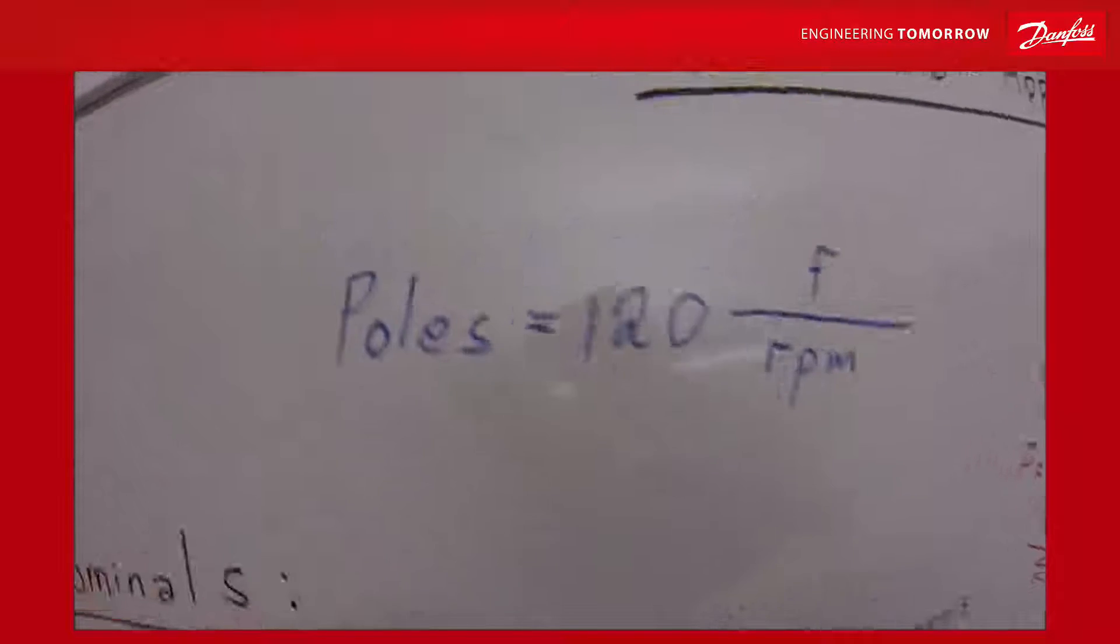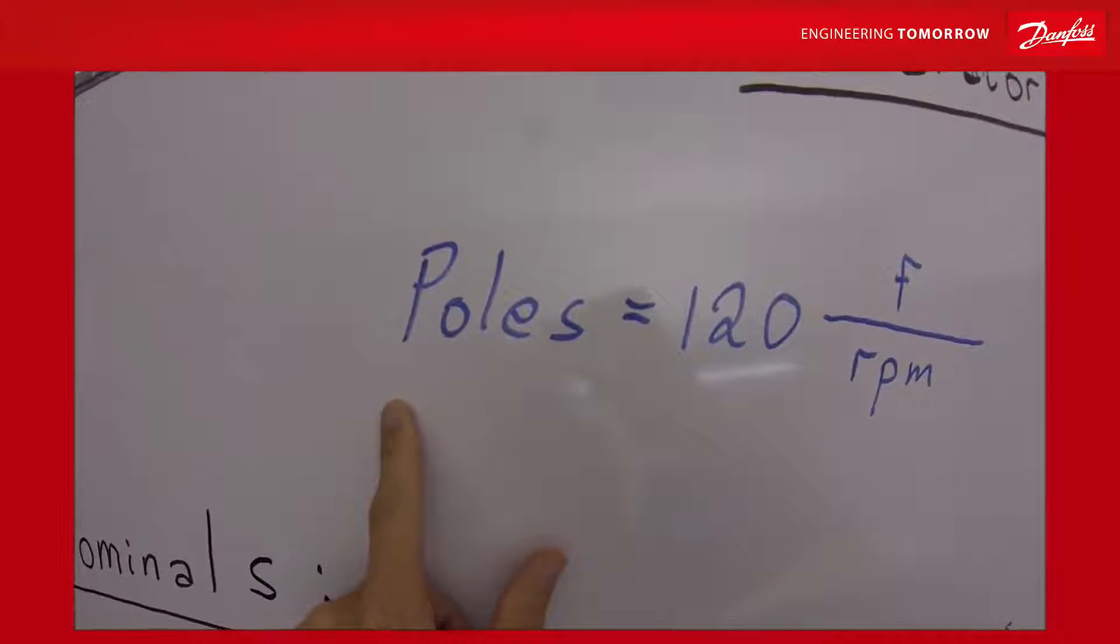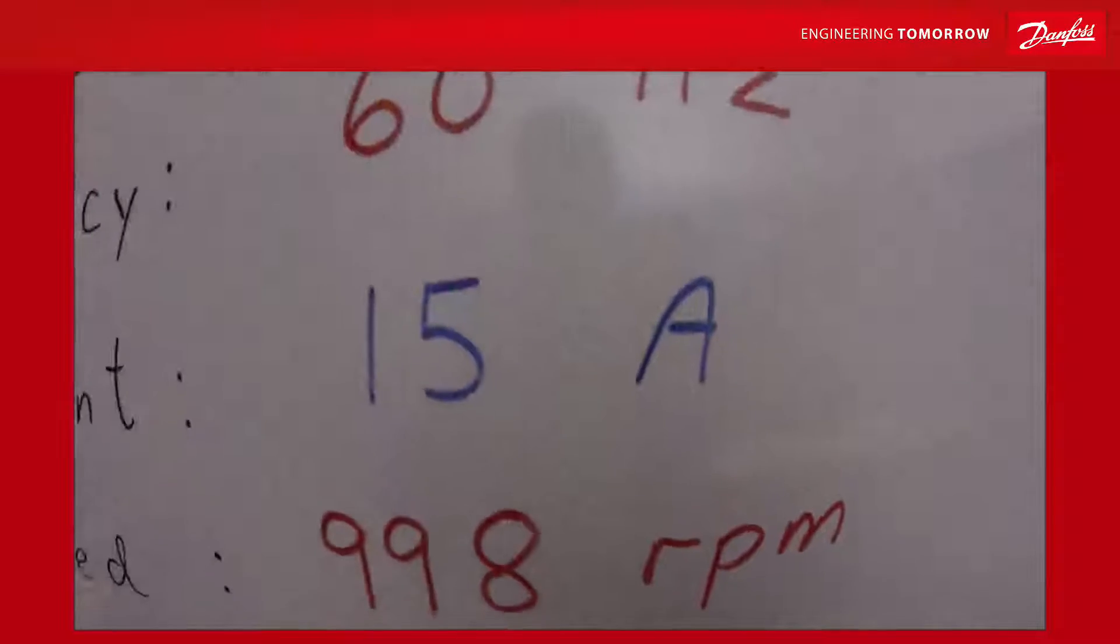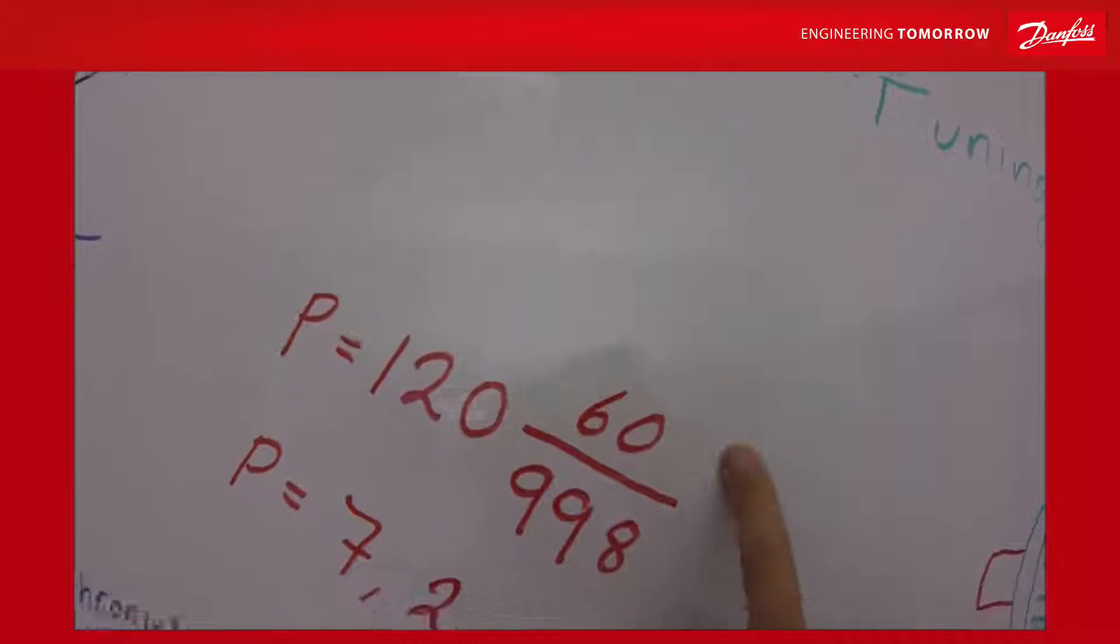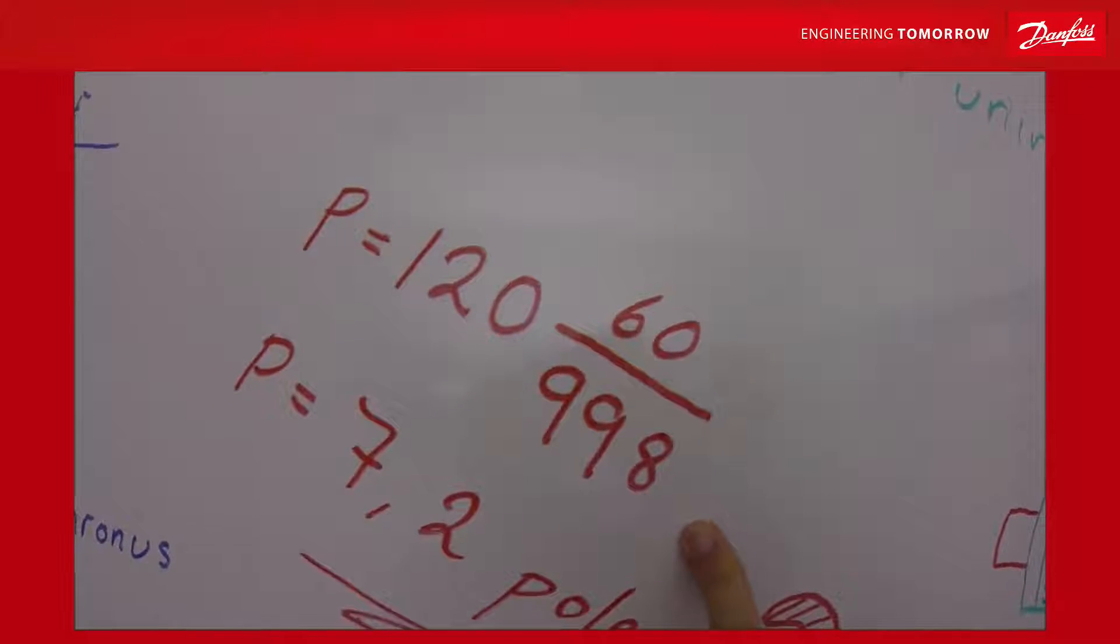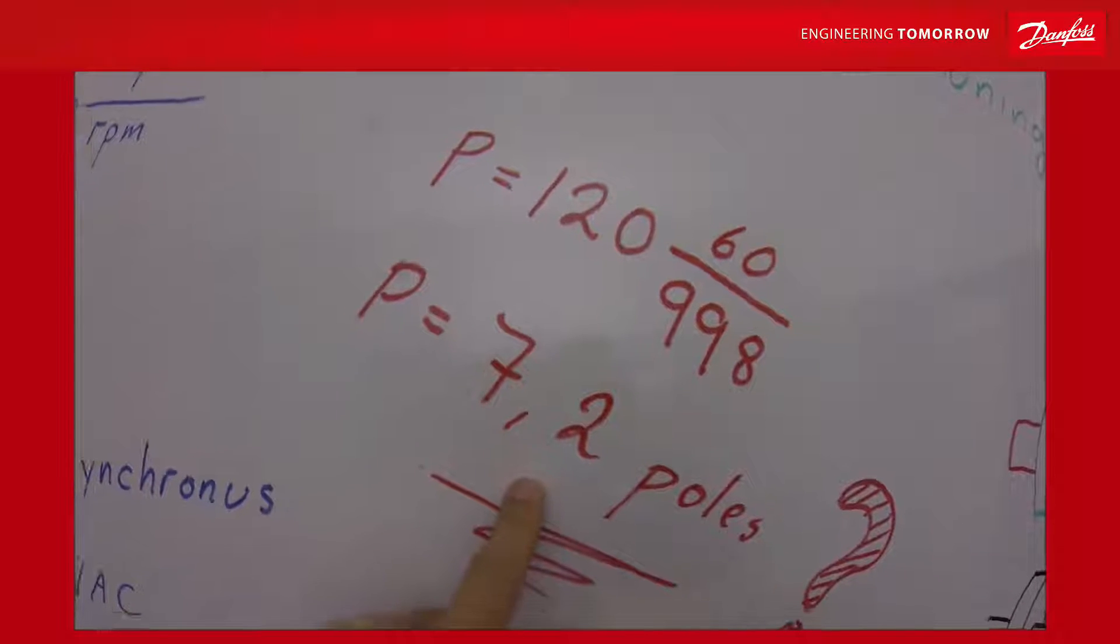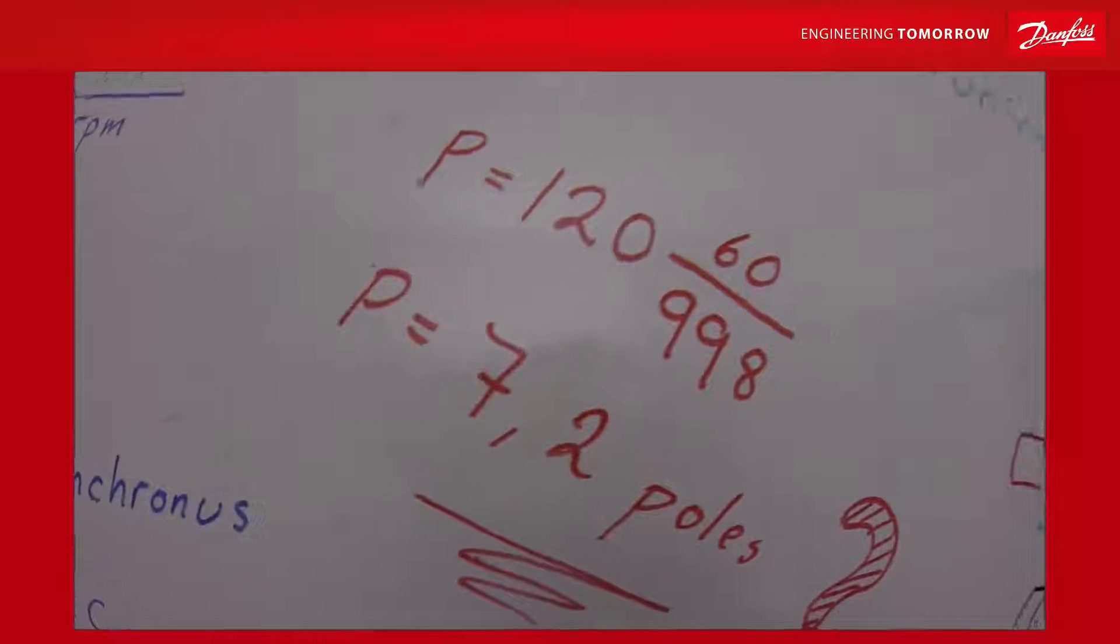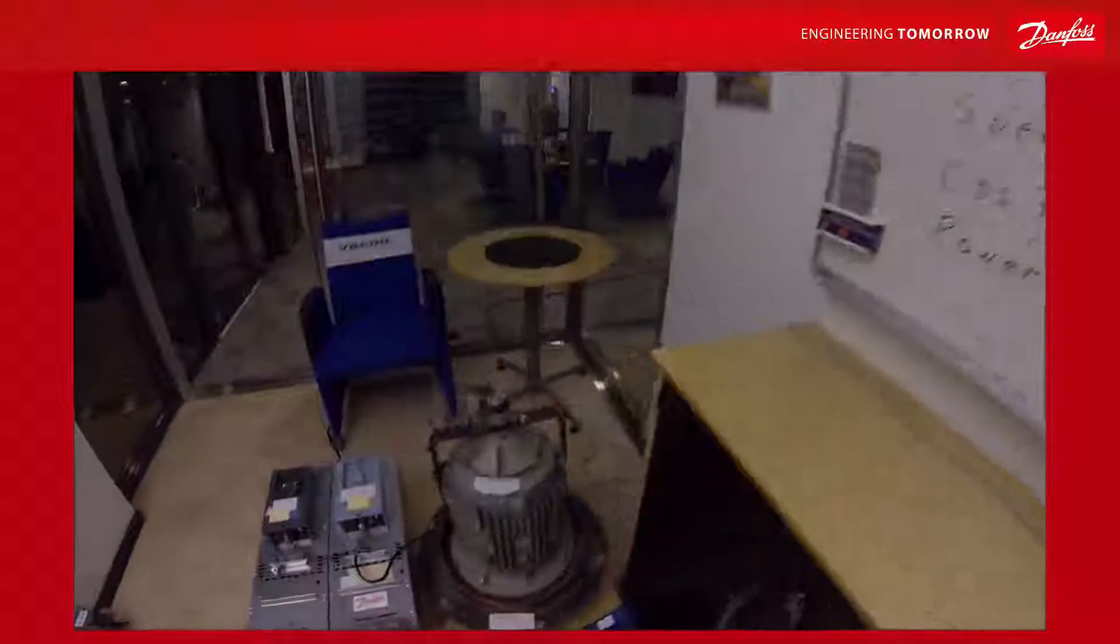The relation between the frequency and RPM will give the pole number. If I put these numbers into the equation something strange. 60 Hertz, 998 RPM. 7.2 poles cannot be right. It should be some number without decimals. So we can do a test to check what actually this motor produces.